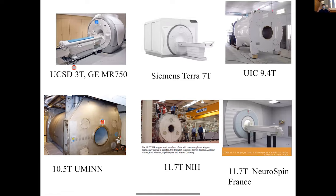Siting can be expensive too — you might spend two to three million dollars on the magnet and then another million to build the room. Seven Tesla is where the field is heading clinically. On the research side there are even higher field systems: 9.4 T, 10.5 T, and 11.7 T. The 11.7 T magnet just opened in France from the NeuroSpin consortium.